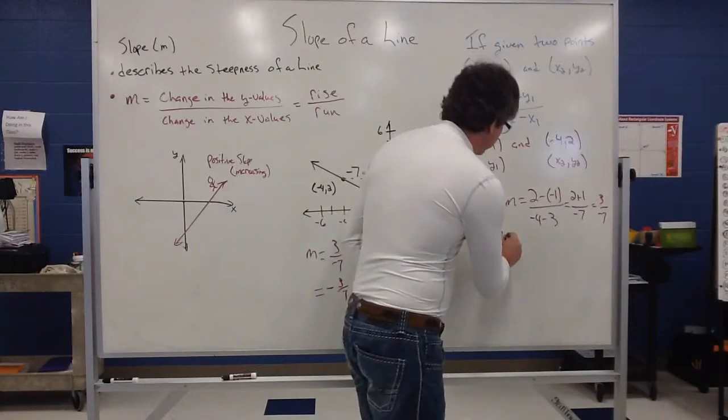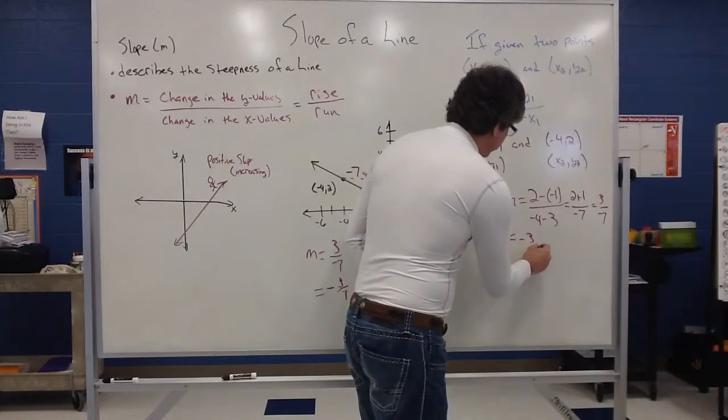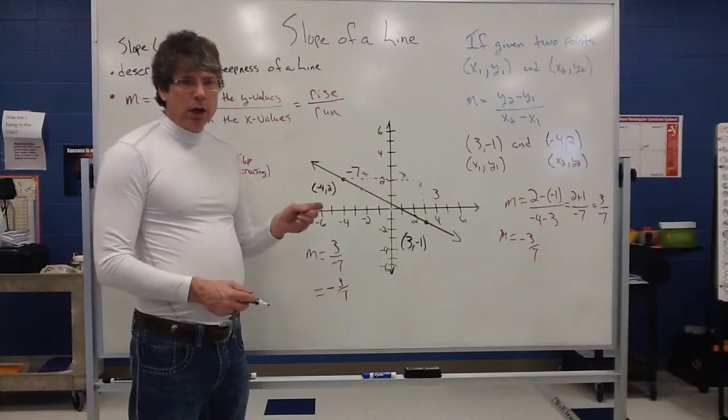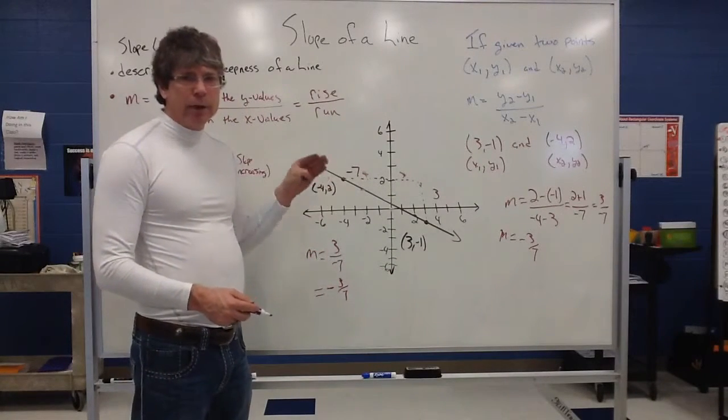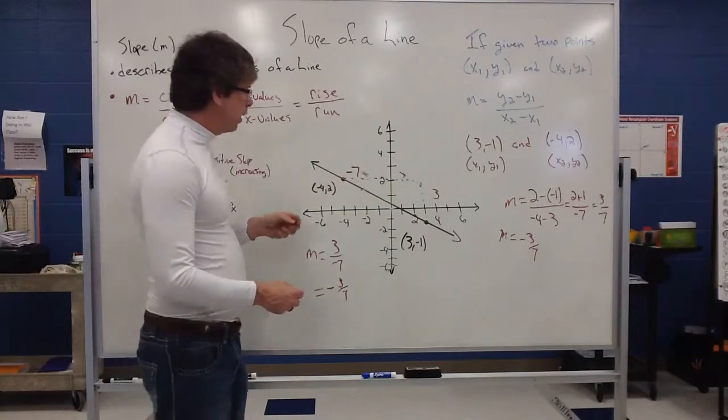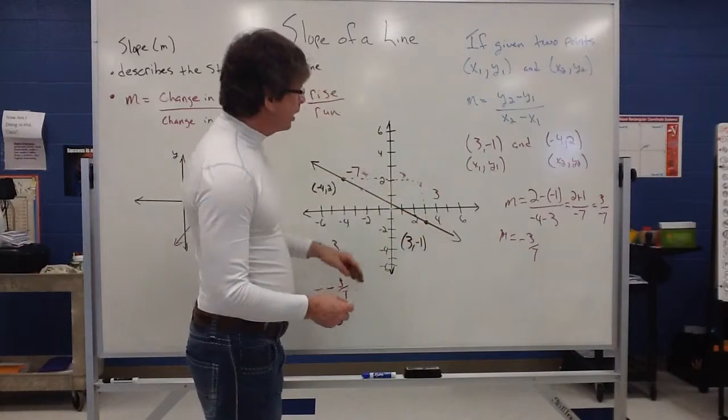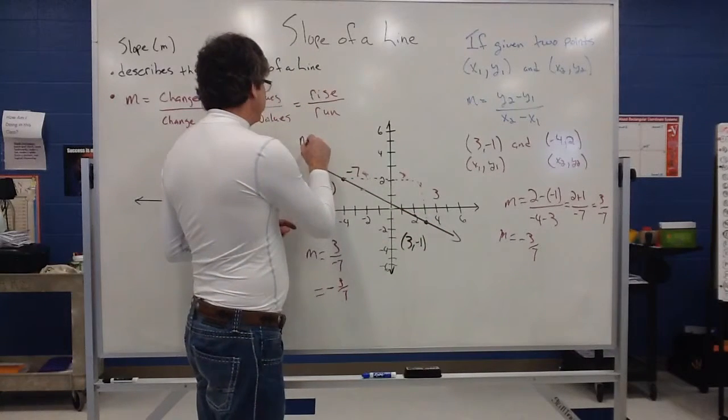So my slope does give me that same thing, a negative 3 sevenths. Notice how that's a negative slope. A negative slope should describe a decreasing graph. So notice if you move from left to right, the graph is kind of going in a downward motion. That's referred to as a negative slope.